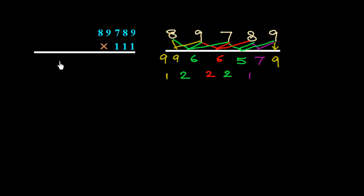So the reply is 9, 9, 6, 6, 5, 7, 9 — that is 9,966,579. This is the result of 89789 × 111.